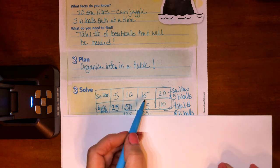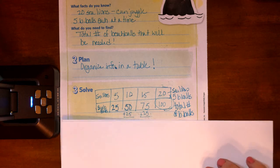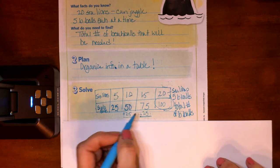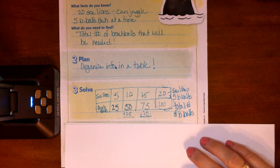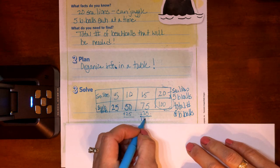And if we have 15 sea lions, that means we're going to add another 25. You can see I did my work right underneath. Well, I didn't really do my work. I wrote it, but I didn't really solve it.